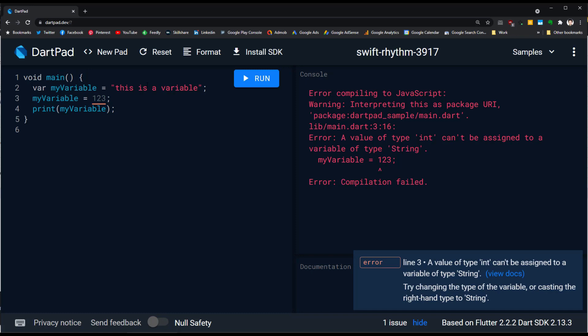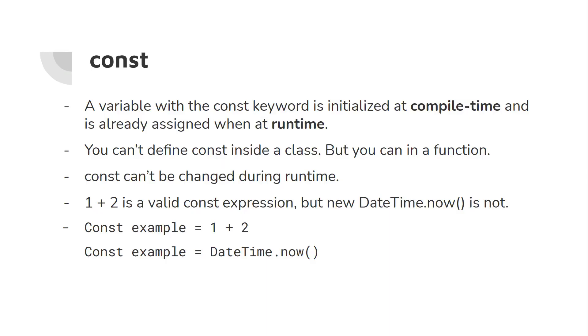But with dynamic, the data type is dynamic and you can change the data type in your program whenever you need it. That's the difference between dynamic and var.